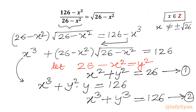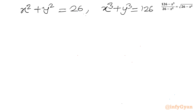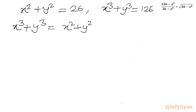So we have to solve this new system of equations: x² plus y² equals 26, and x³ plus y³ equals 126. I will use the algebraic identity: x³ plus y³ equals (x² plus y²)(x plus y) minus xy(x plus y).